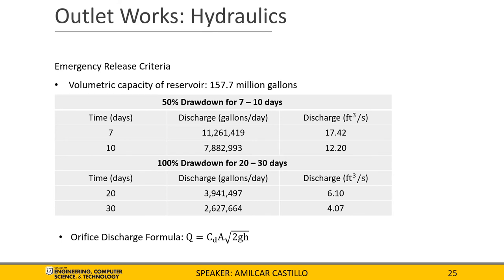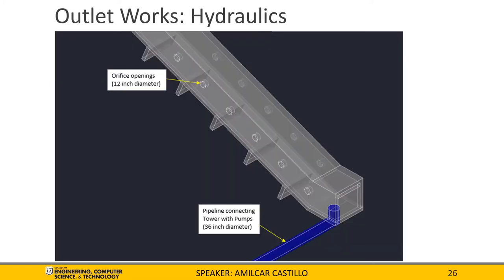To accommodate the emergency release criteria required by the Division of Safety of Dams, we took our volumetric capacity of the reservoir and determined the discharge demand required to drain the reservoir within the allotted time. We chose to focus on the discharge demand for the 10-day period since it gave us the lowest demand within the critical period of 7 to 10 days. Using the orifice discharge formula, we determined that our incline tower would have 12-inch diameter orifice openings staggered along the walls of the incline tower at five-foot increments. The incline tower will also have a 36-inch diameter pipeline attached to its base to deliver water to the pump station on the downstream side of the dam.